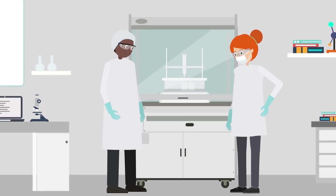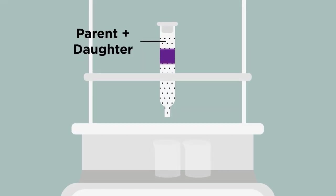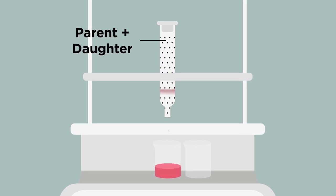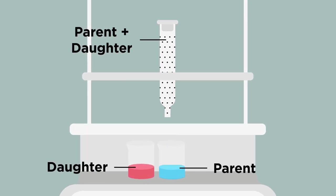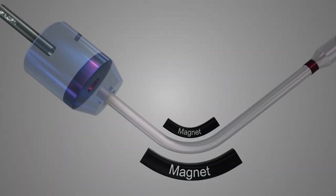To use an isotope system like this to tell time, scientists must first chemically separate and purify the parent and daughter isotopes from each other. The amount of each isotope must then be determined using specialized instruments.